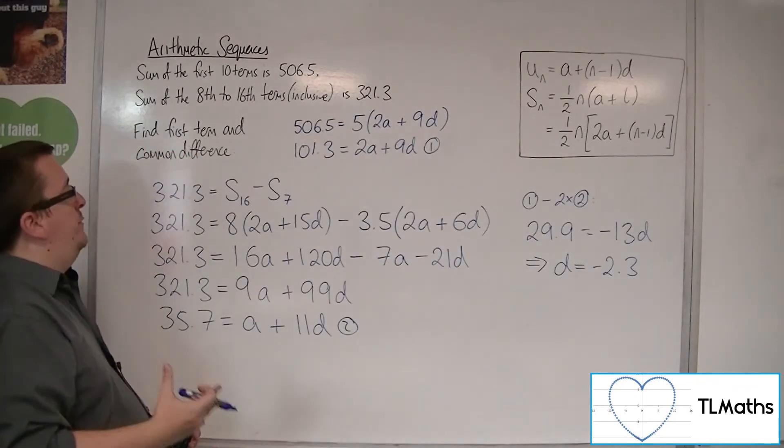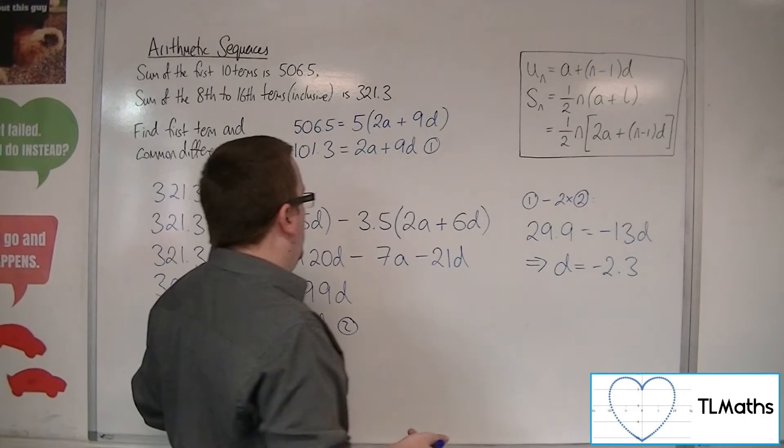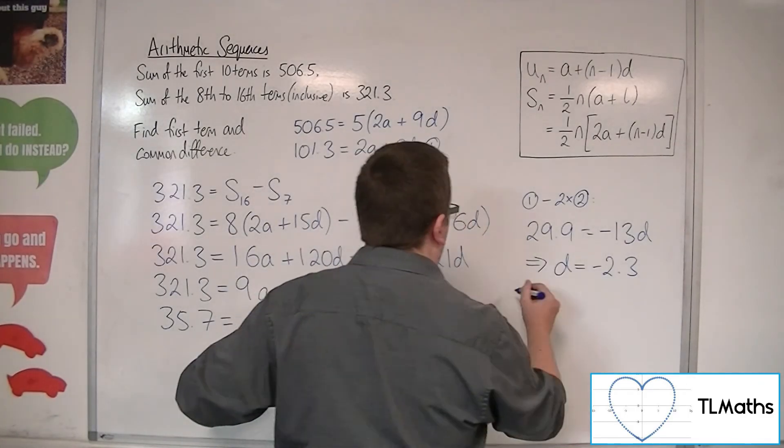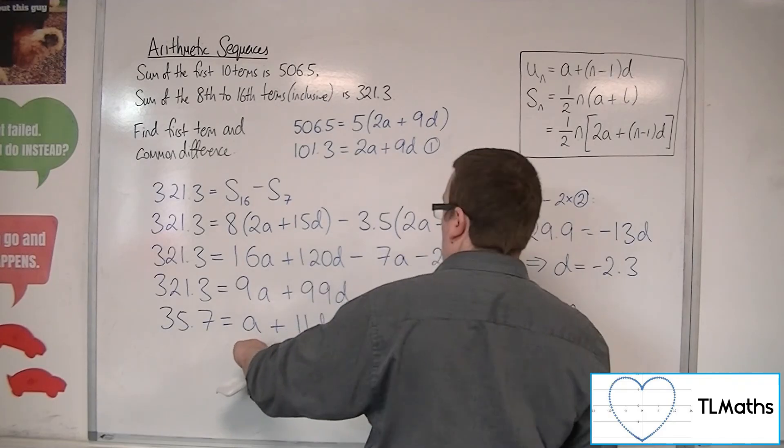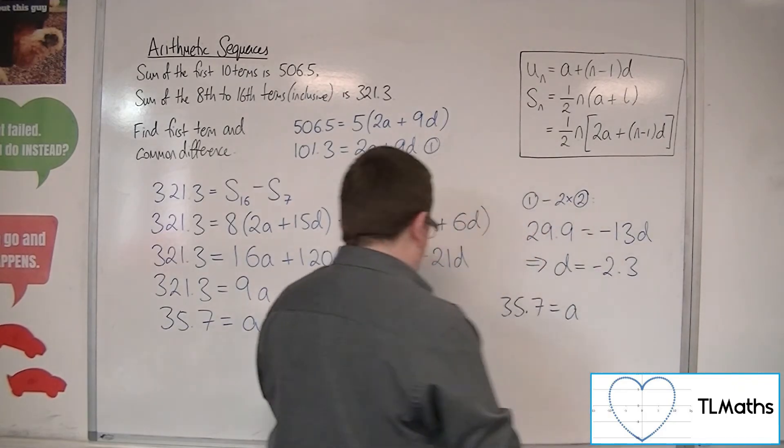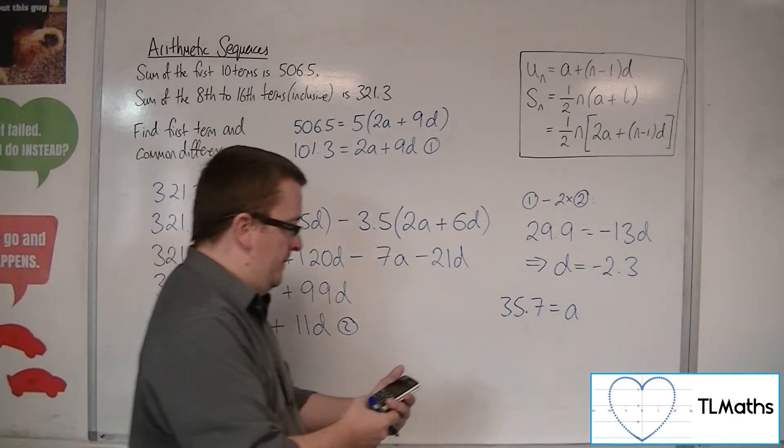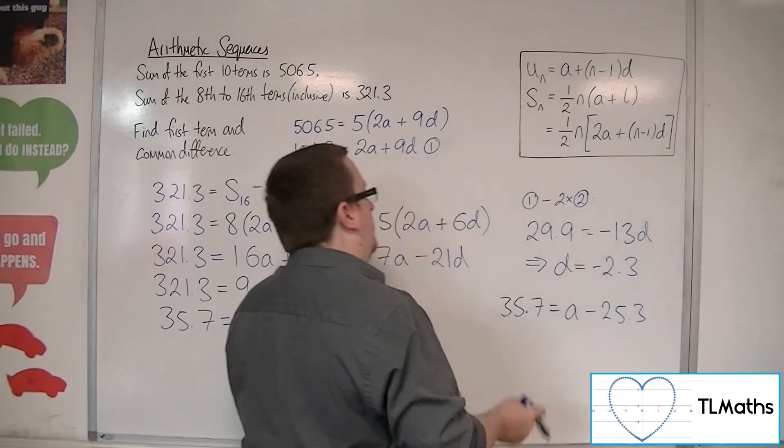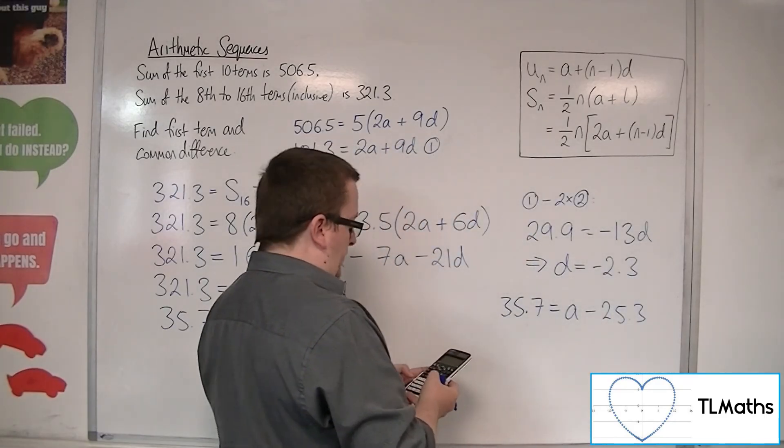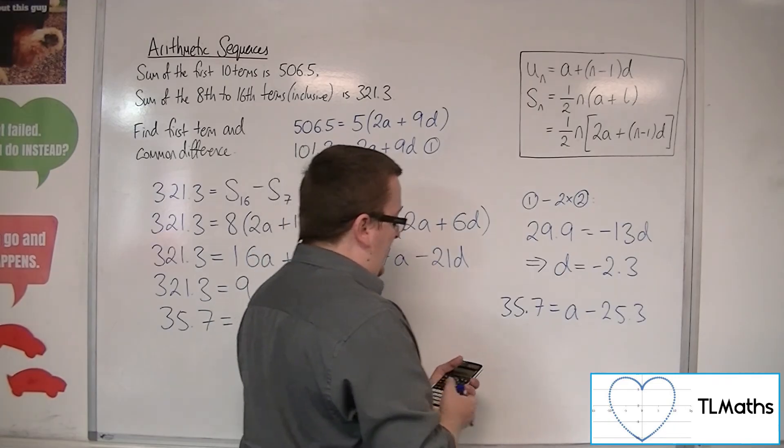I can now substitute that into either of my two original equations. I'm going to substitute it into the second one. So 35.7 equals a plus 11d. So 11 lots of minus 2.3 is minus 25.3. So add that to the 35.7. So 35.7 plus 25.3 makes 61.